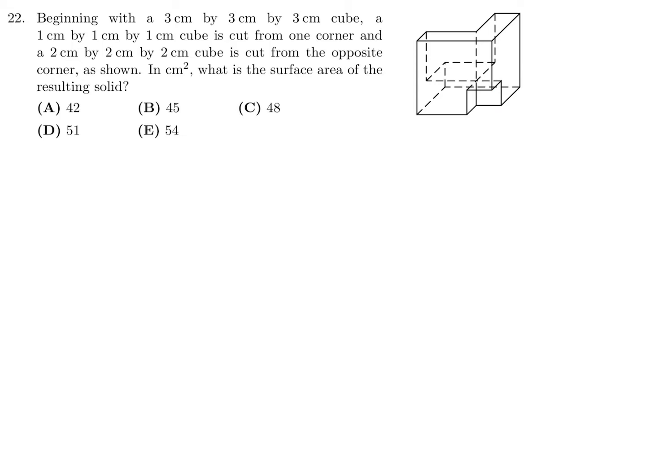And you can use the same sort of argument on the other side. So all you really have to do is figure out the surface area of the solid in the beginning, before the cuts. And that surface area is just 6 times the area of each side, which would have been a 3 by 3 side. So 6 times 9, which is 54.